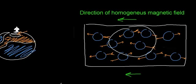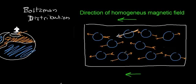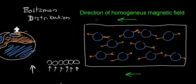The distribution of nuclei aligned with versus against the field follows the Boltzmann distribution. What this means in essence is that more nuclei will be in the favorable state — aligned with the magnetic field — which is the more stable, less energetic ground state. A smaller population will be in the unfavorable state — aligned against the field — which is a higher energy state.